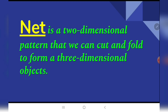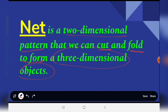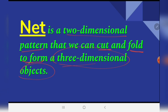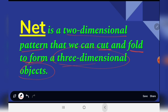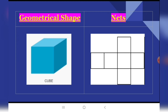Next, what is a net? A net is a two-dimensional pattern that we can cut and fold to form a three-dimensional figure. Take note of the word 'pattern' — a two-dimensional pattern that we can cut and fold to form a three-dimensional object.